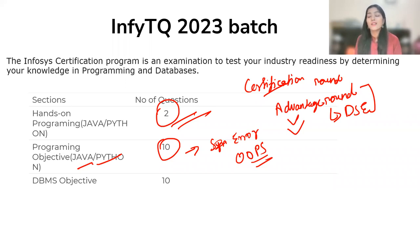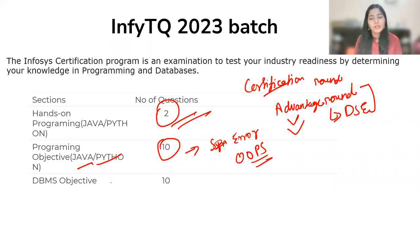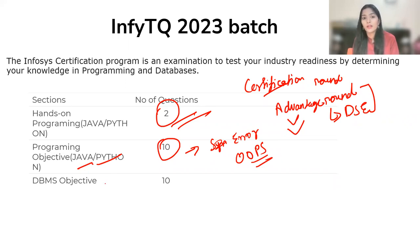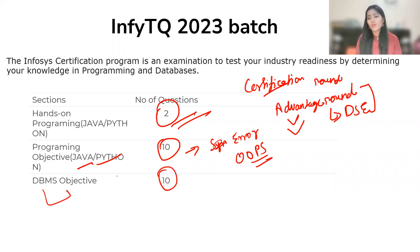I would recommend going through previous question papers - it will really help because the level is not easy. Having some understanding beforehand about what types of questions are asked helps you prepare accordingly. Practical knowledge is very important. Your basic concepts should be clear for the objective part. For DBMS, your basic concepts should be clear and you should have done hands-on queries. For DBMS objective, there will also be 10 questions, though this time they have changed the pattern somewhat.